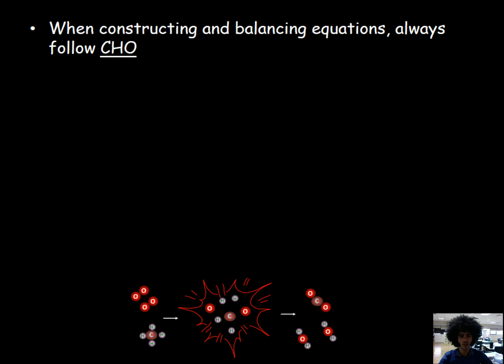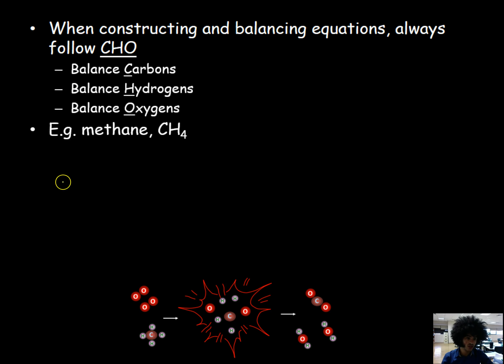Now when you're constructing and balancing these kind of equations always try and follow what I call CHO. That is the path you take when you're balancing these equations. First off you balance your carbons, then you balance your hydrogens, and then you balance your oxygens, and at the end you give it a bit of a check. So for example if you do it for methane which is the example we've just had. I start with CH4, I'm just going to put here. I know that because it's burning or combusting it's got to react with oxygen so I'm just going to put O2 over here. That's going to form H2O plus CO2. I know that because it's complete combustion those are always the products. Now I have to balance it. I'm going to do my CHO.